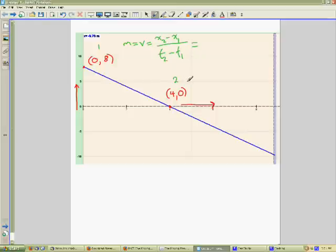The x coordinate on my second point is zero, minus x1. x1 is 8, over t2 is 4, and t1 is 0. So minus 0.